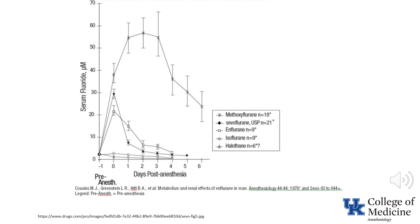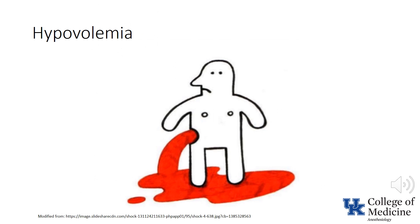With the exception of methoxyflurane, which is no longer used, metabolism of volatile anesthetic agents to inorganic fluoride is not a problem with regard to renal function. In patients with diabetes, hypovolemia is a risk factor for the development of renal failure. Patients with diabetes undergoing any surgical procedure associated with significant blood loss, such as aortic surgery, trauma, or liver transplantation, are at increased risk for postoperative renal dysfunction. Essentially, no intraoperative interventions, other than maintenance of normal volemia and avoidance of nephrotoxic agents, reduce the risk.